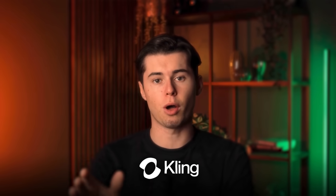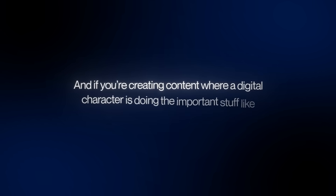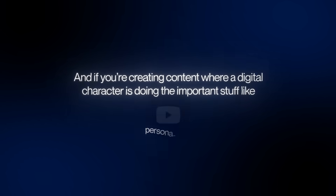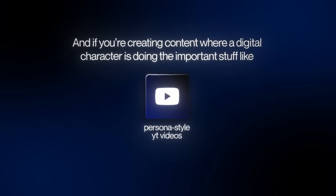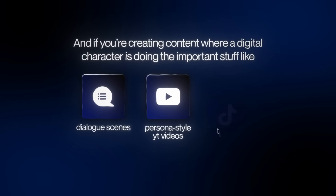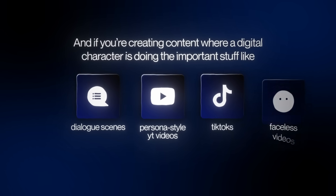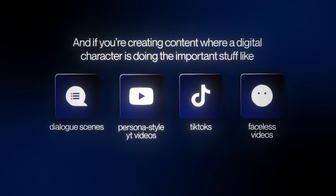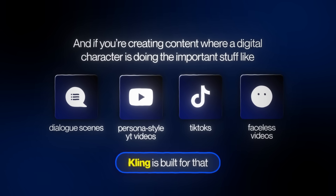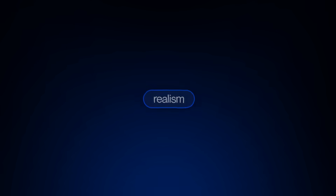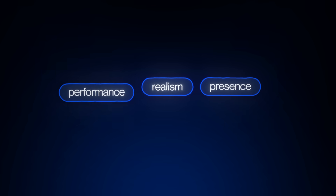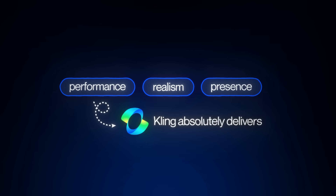Kling gives you control over all the little touches. If you're creating content where a digital character is doing the important stuff — like persona-style YouTube videos, dialogue scenes, TikToks with a main character, or faceless videos that still need a human element — Kling is built for that. It's not designed for sweeping cinematic shots or lightning-fast generation, but when it comes to realism, presence, and performance, Kling absolutely delivers.